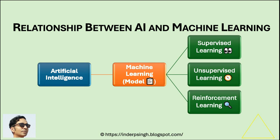Artificial intelligence in software testing is a broad field that includes various subfields, including machine learning. AI means systems that mimic human intelligence. Machine learning involves teaching computers to learn from data and make decisions without being explicitly programmed.